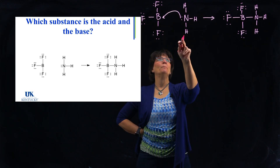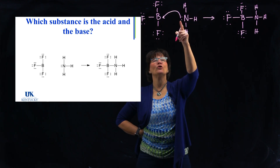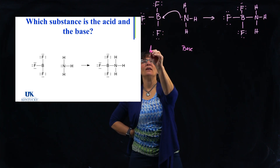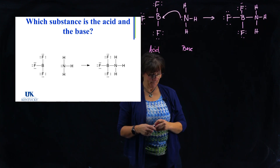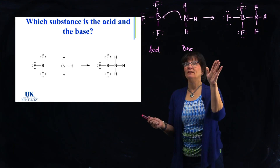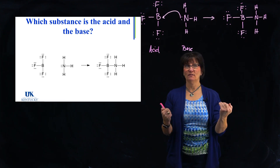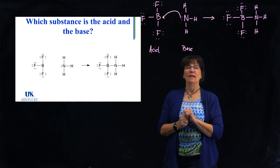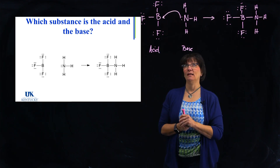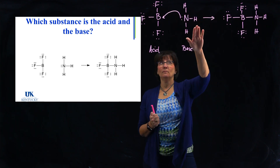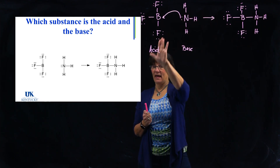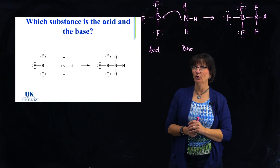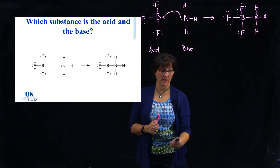Is it an acid or is it a base? It is an electron pair donor — that makes it a base. This is the acceptor — that makes it the acid. Now, does it fit the definition of any of the other ones? Would it fit the Bronsted definition? Is there a proton swap happening here? Well, there are H's, but are the H's leaving one and going to the other? No. So it doesn't fit the definition of a Bronsted. It only fits the Lewis definition of an acid and a base.